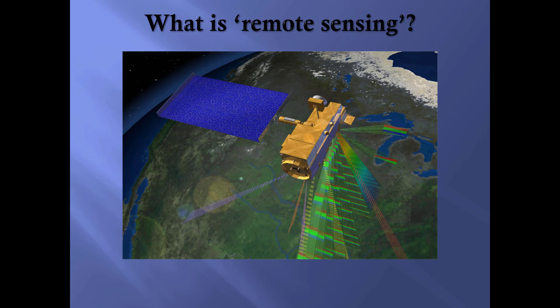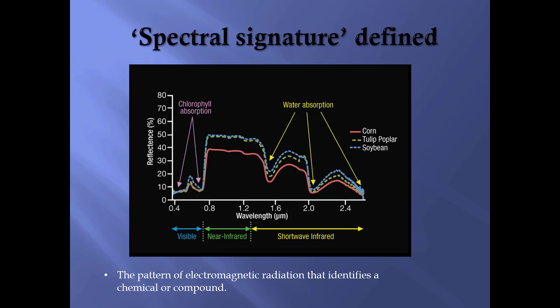Before we jump into that graph, let's pause and think about what remote sensing is. We've defined it as collecting information about an object without being in contact with that object. When working with the tools of remote sensing, it's important to think about what those tools are telling us. A spectral signature is a pattern of electromagnetic radiation that identifies a chemical or compound.